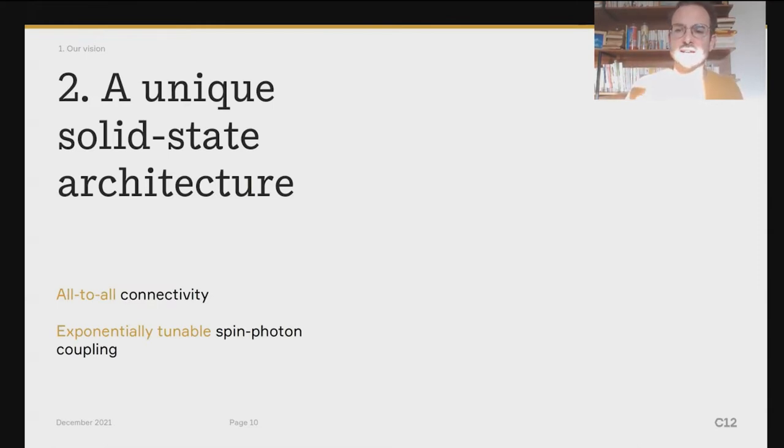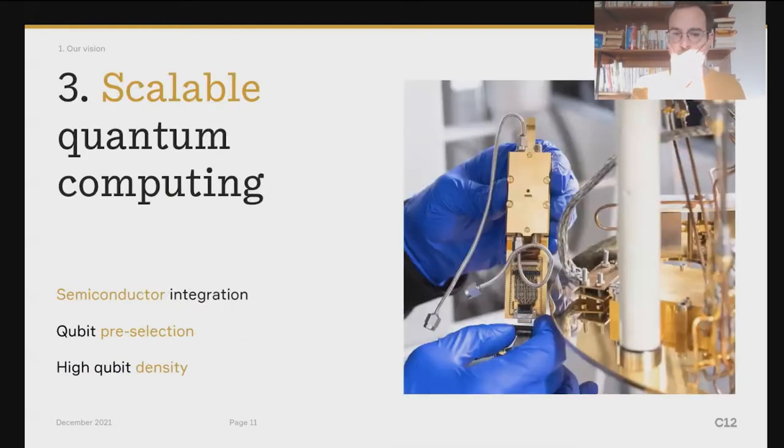So fidelity and quality of the qubits is what we think is a very important feature. But you also have to build this in a way that we'll be able to operate a large-scale quantum computer. And our technology holds great promises for scalable quantum computing. It's a semiconductor technology. We also have the possibility to pre-select qubits before integrating them on the chip. So it's kind of the ultimate modularity. And last, we have a high qubit density because our qubit footprint is extremely small.